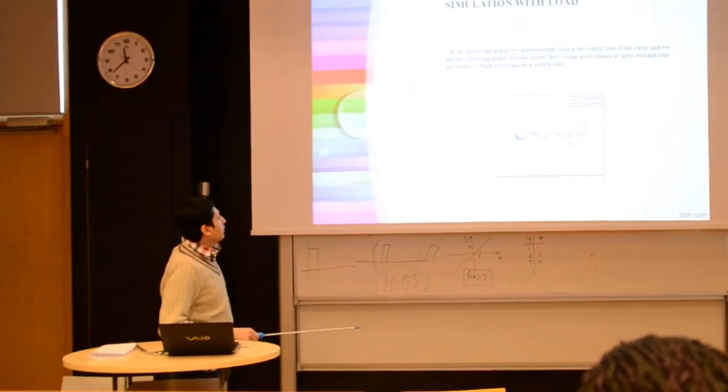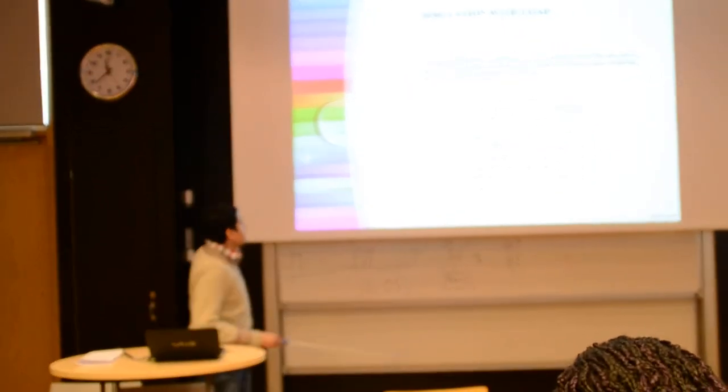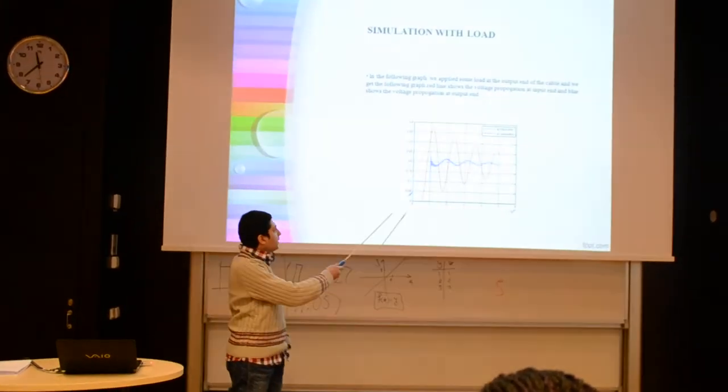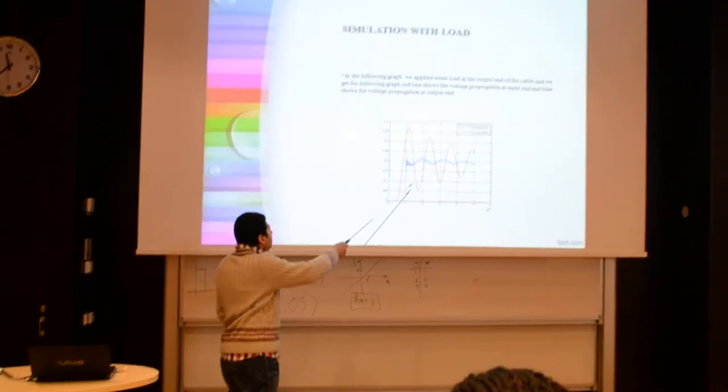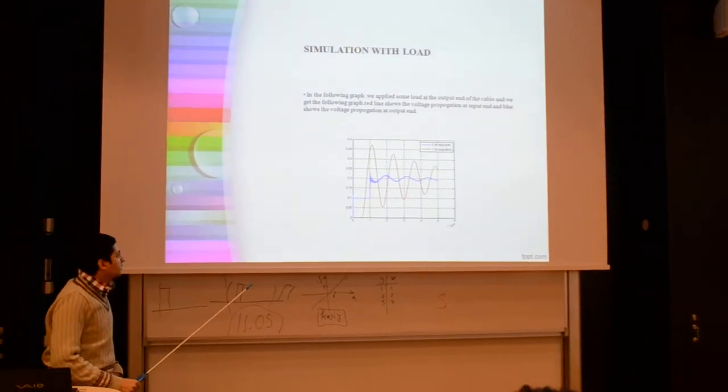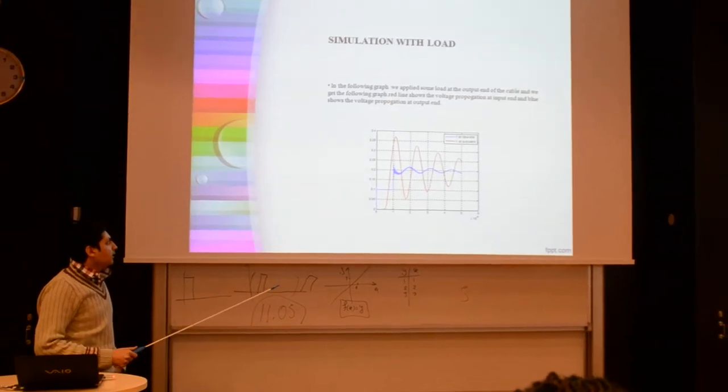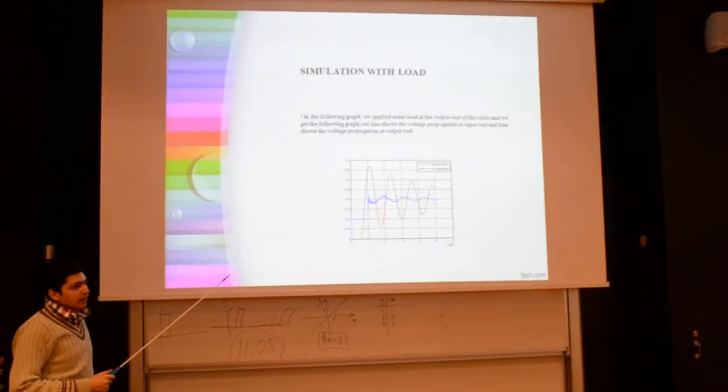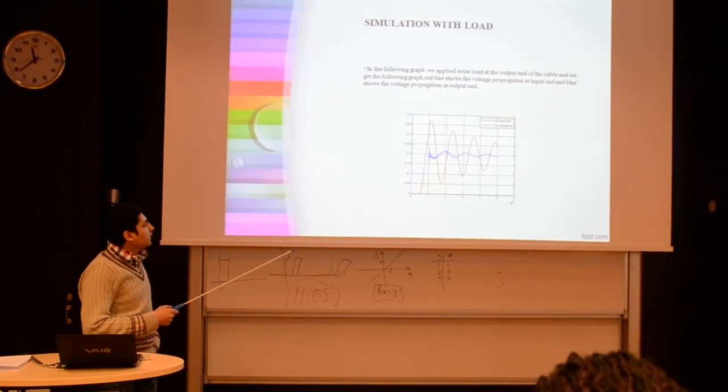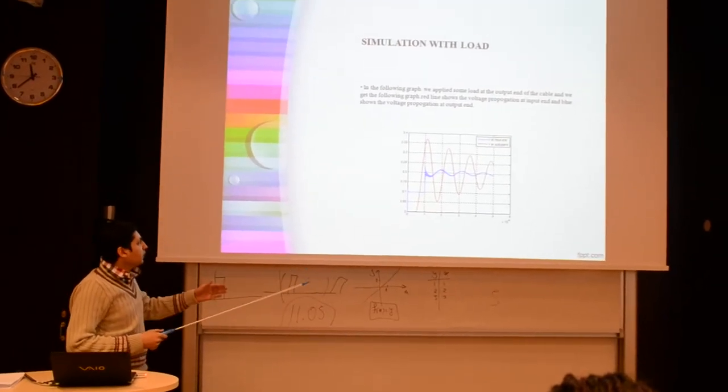This is the simulation with the load. Here I don't know if there was some fluctuation, but maybe if we increase the time the voltage will be the same with the load. So maybe it's because of the reflection time or impedance that resulted in the fluctuation or a little more fluctuation in the input end.